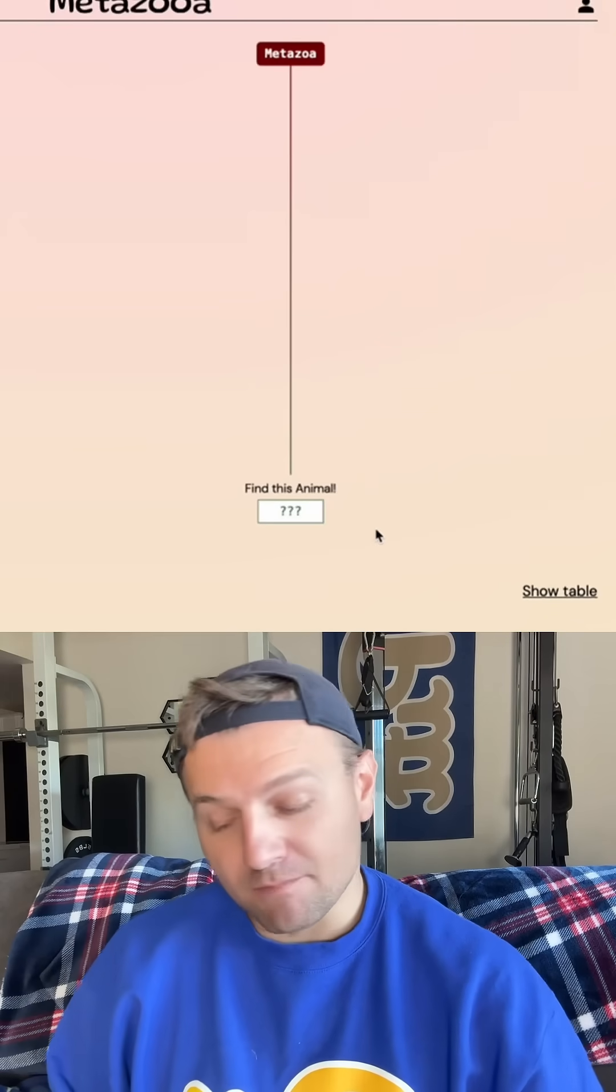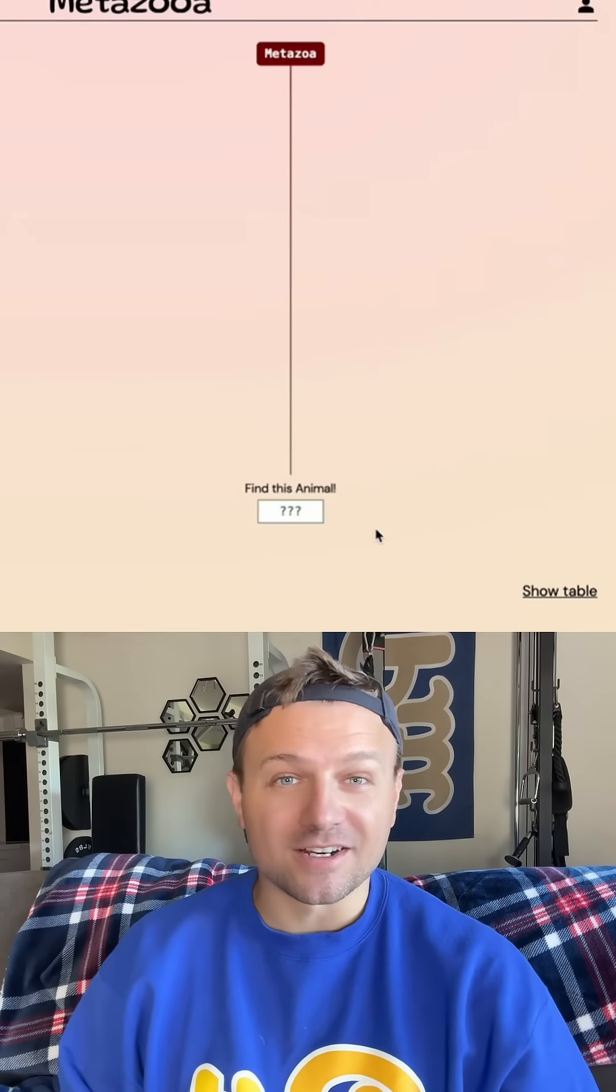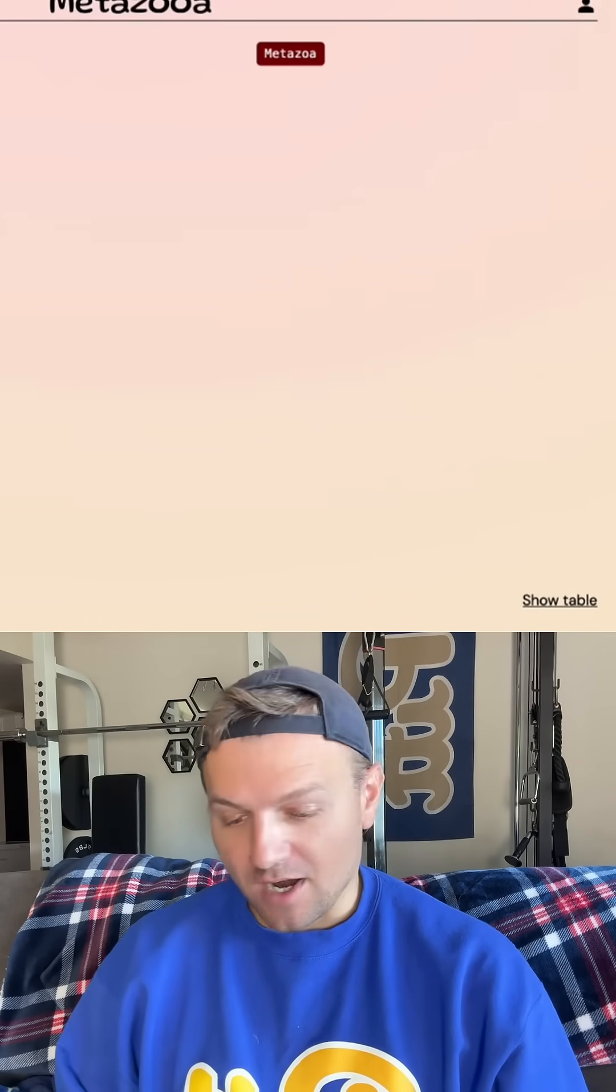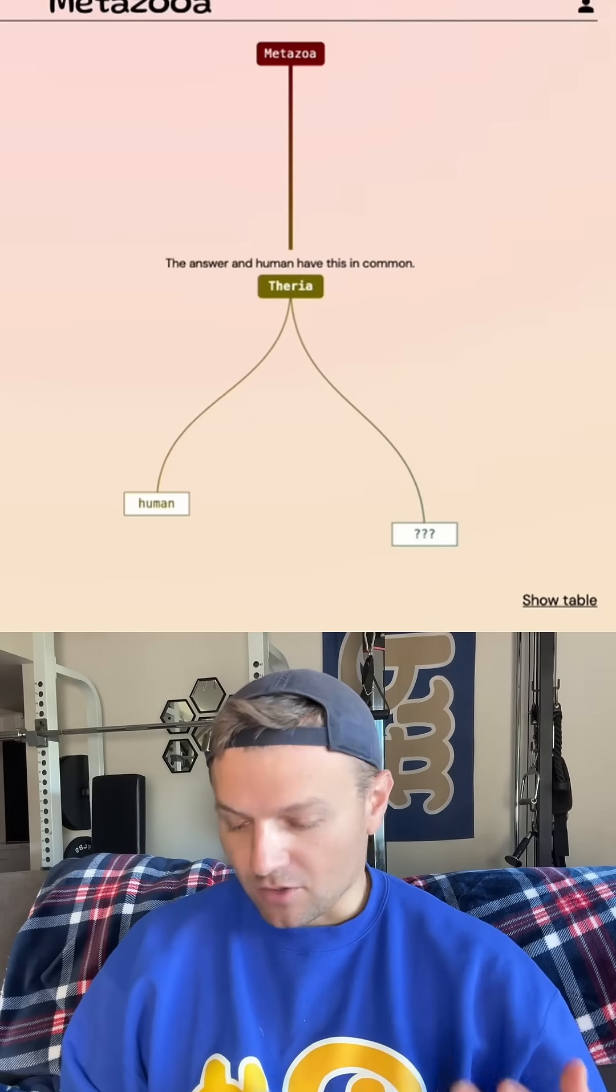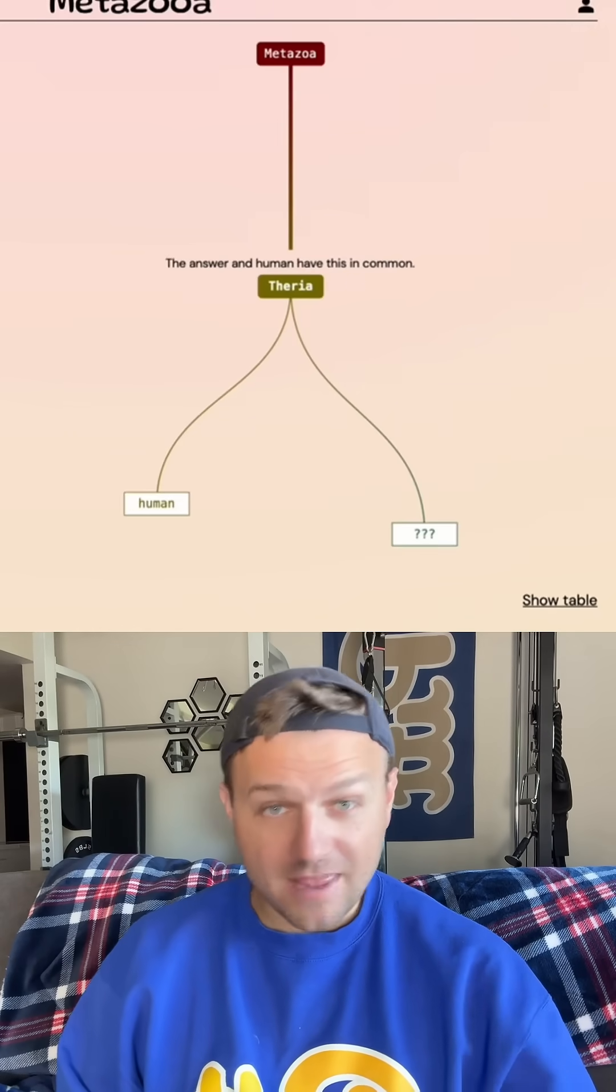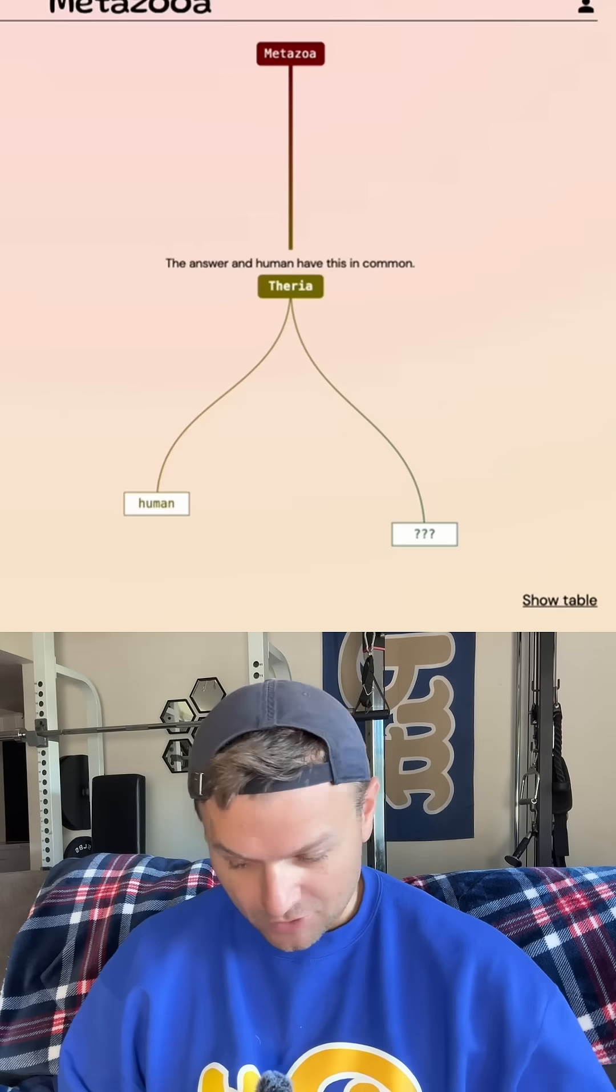Let's see how long it takes me to guess the species today on Metazooa. Today is day 813. Like always, we're going to start out with humans. So Etheria is our group that we're going to start out today, which means it's some type of mammal. And that mammal could be a placental or a marsupial.